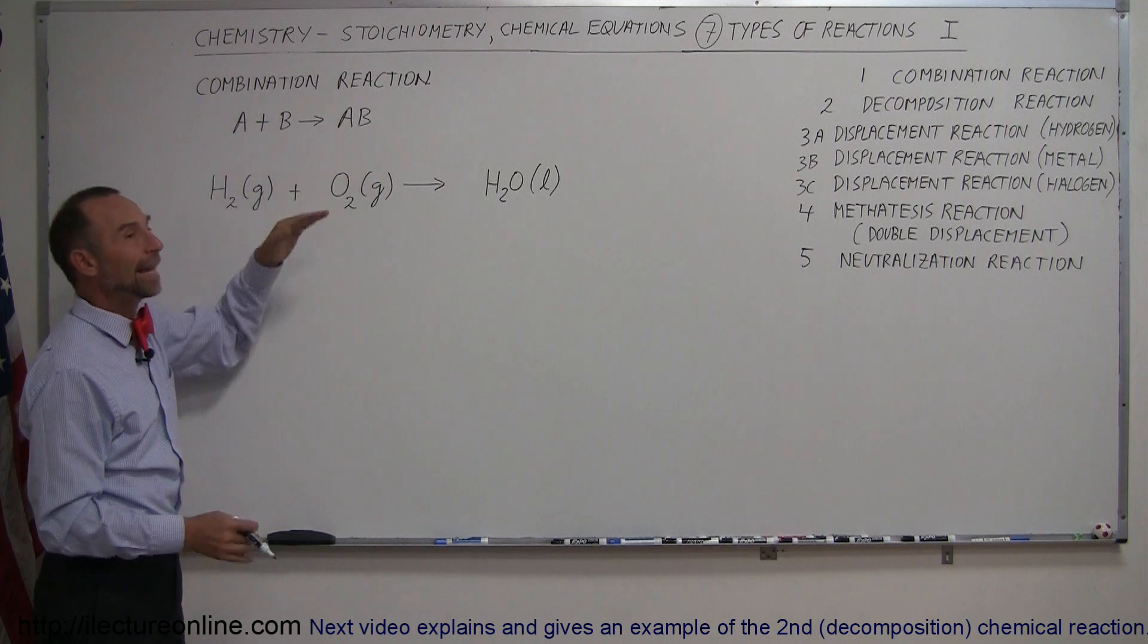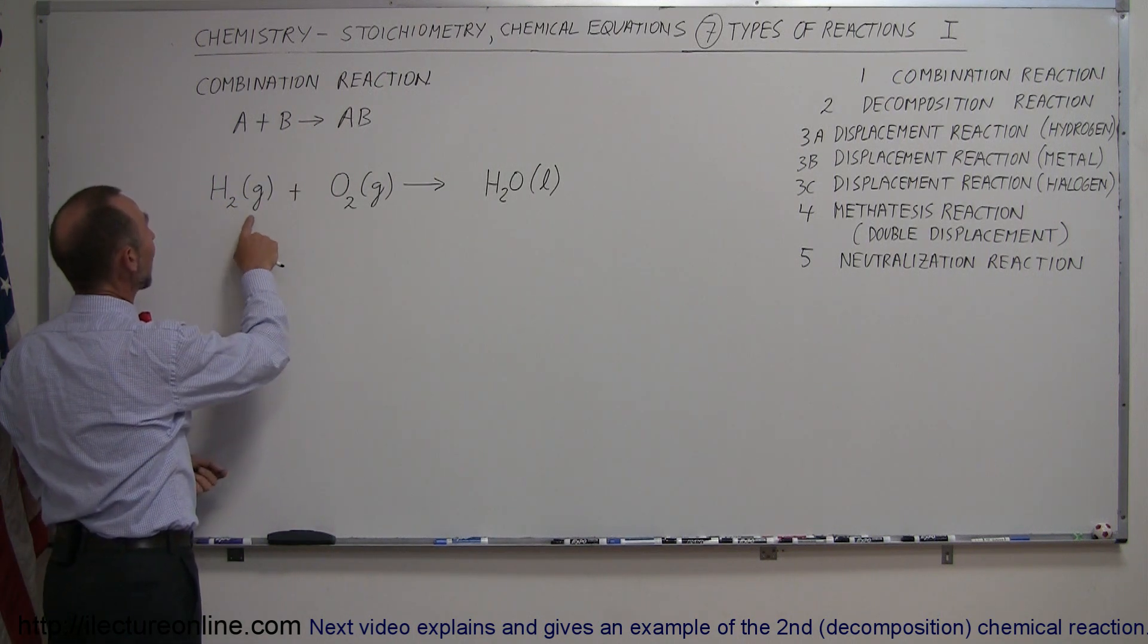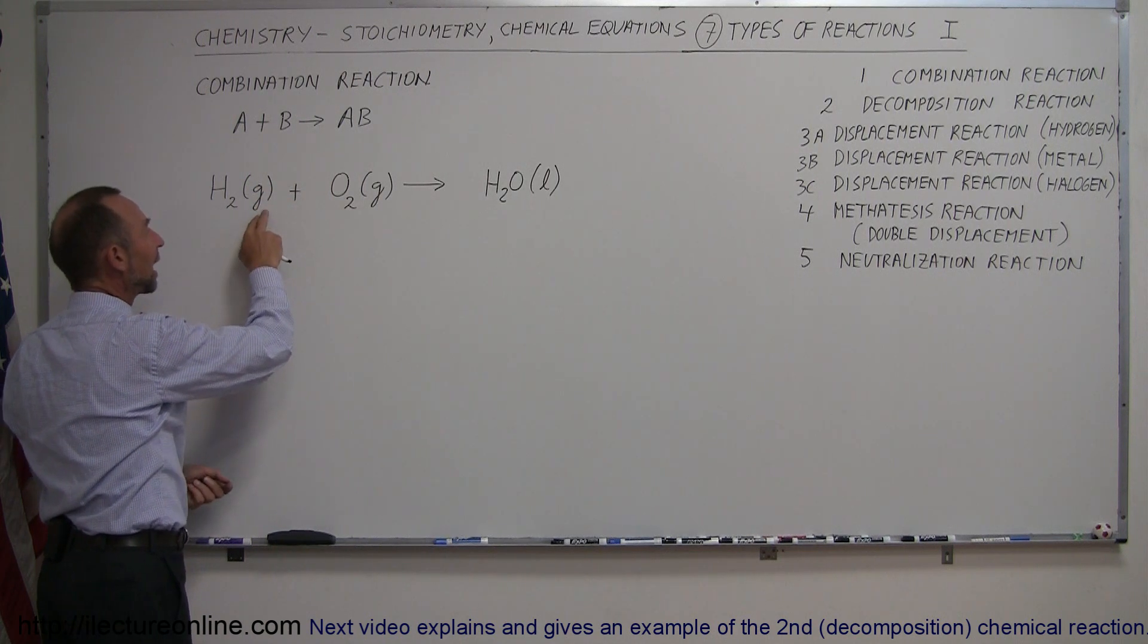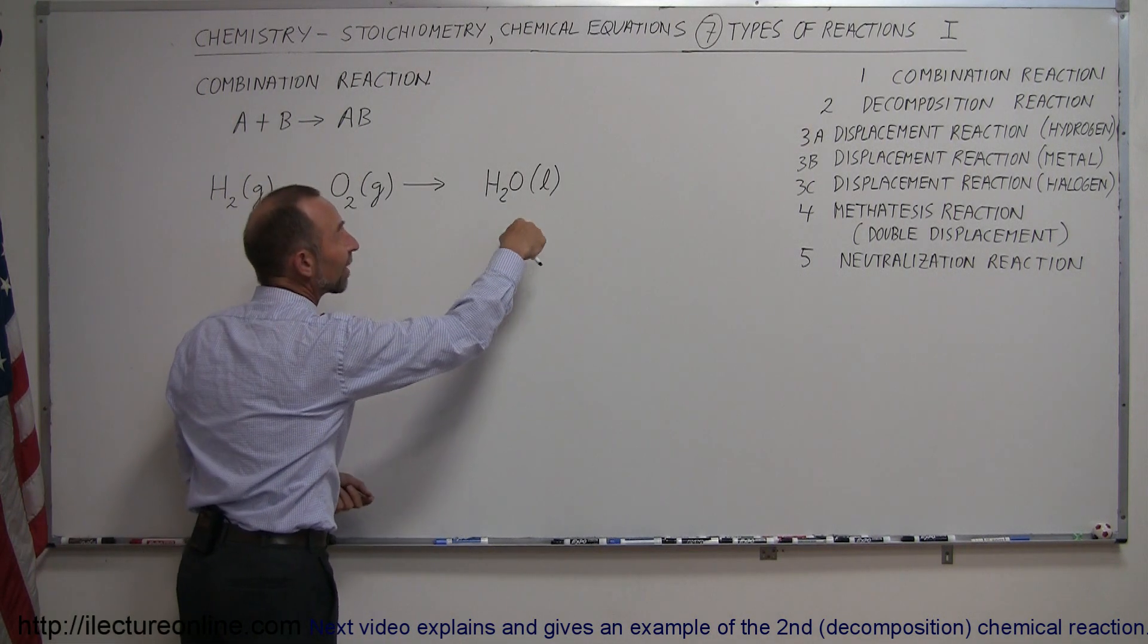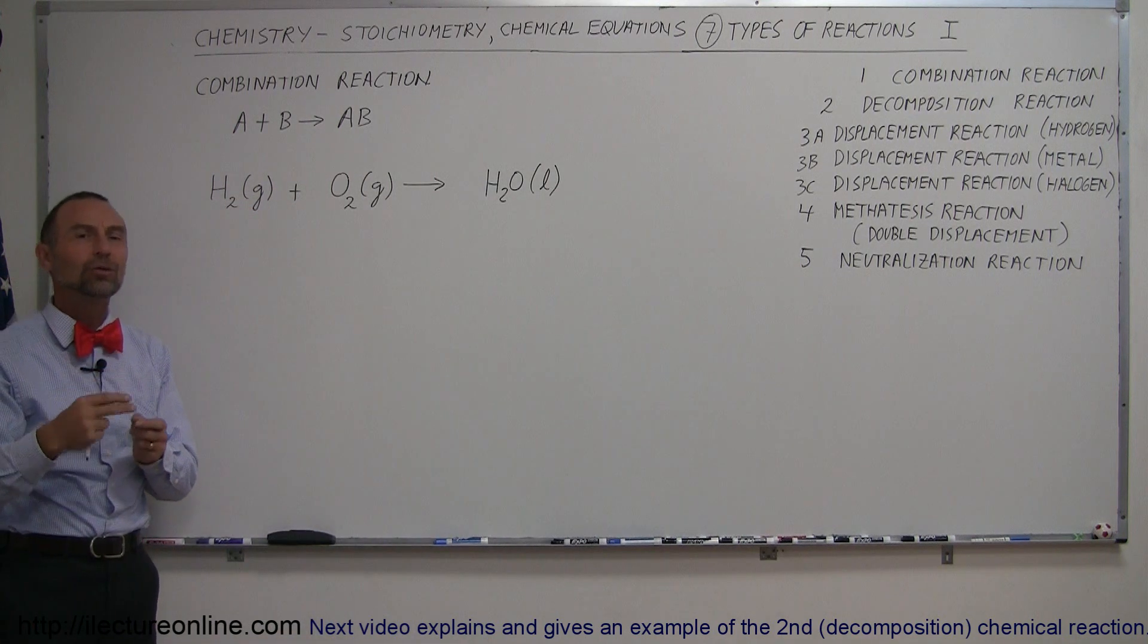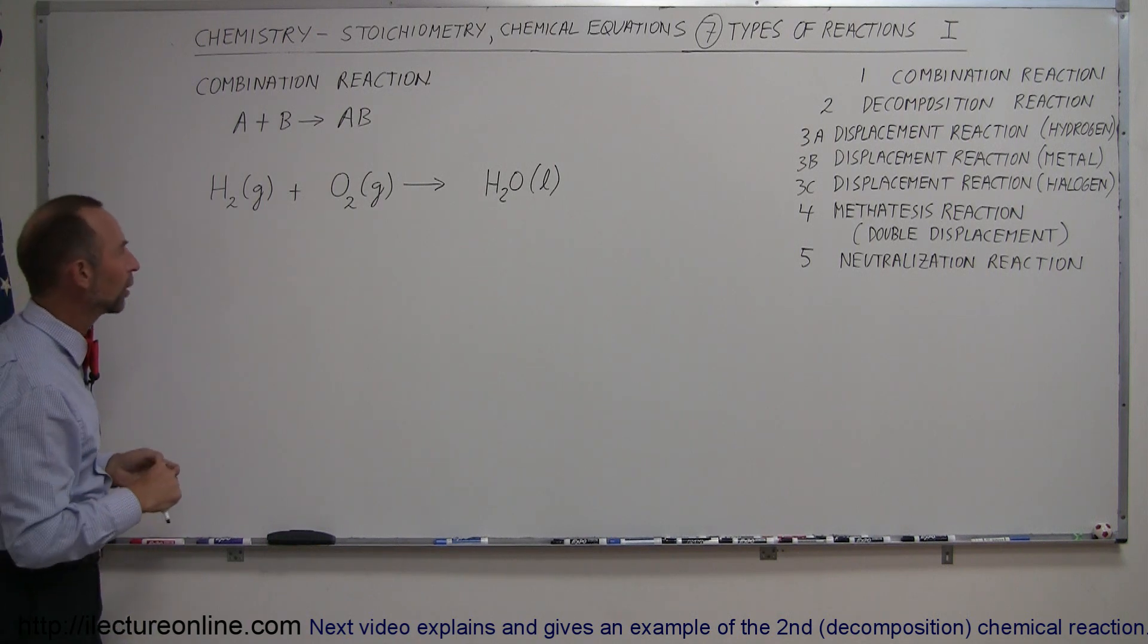And they yield something where A and B are now combined. As an example, let's say we have hydrogen gas, and this little parenthesis with the G there indicates that this is a gas. Here we have an L, that indicates that's a liquid. We can also put an S there, that indicates it's a solid. Or an AQ, which means it's an aqueous solution, means it's dissolved or placed into water.